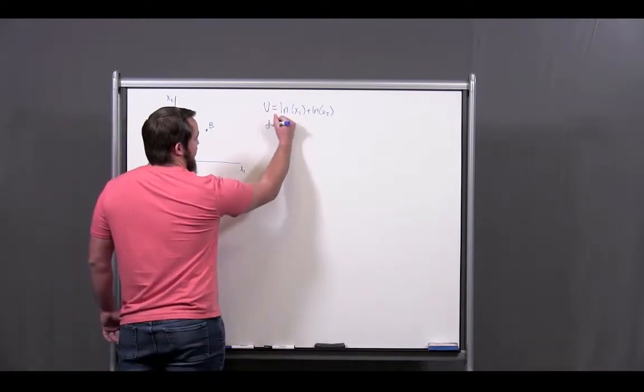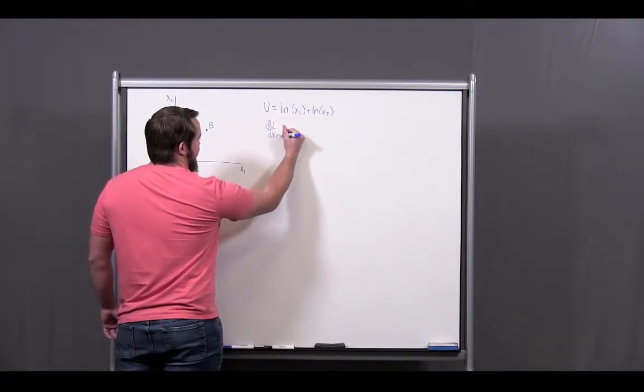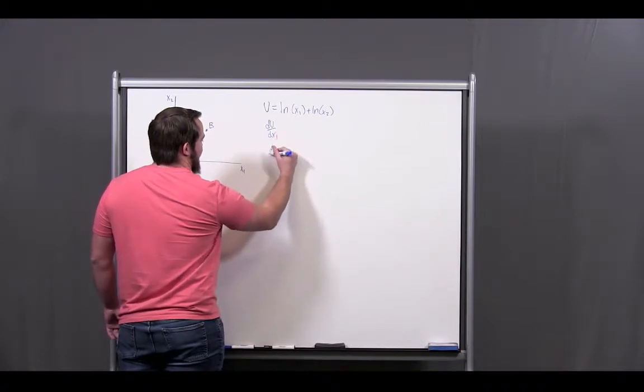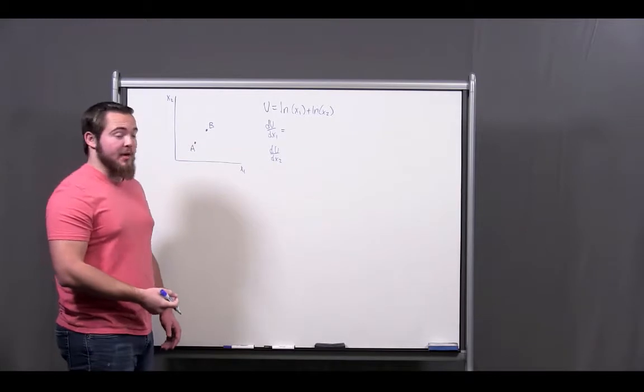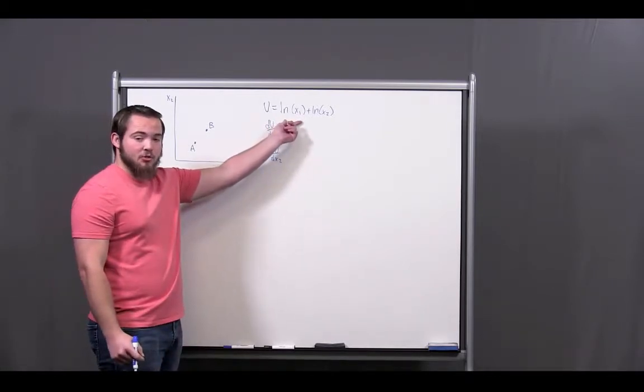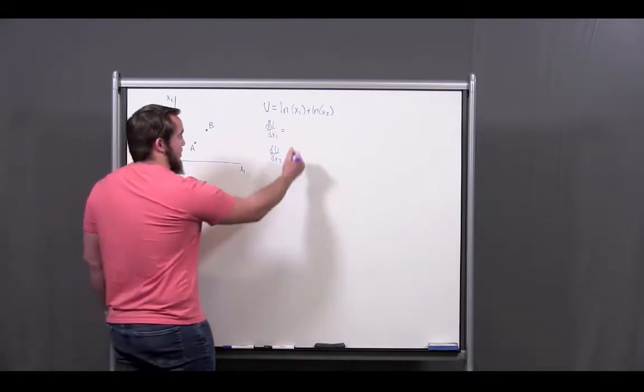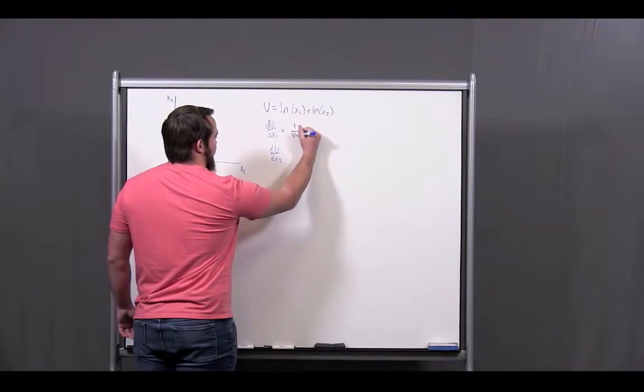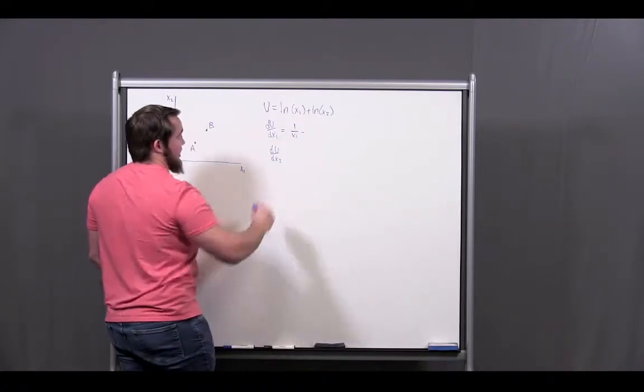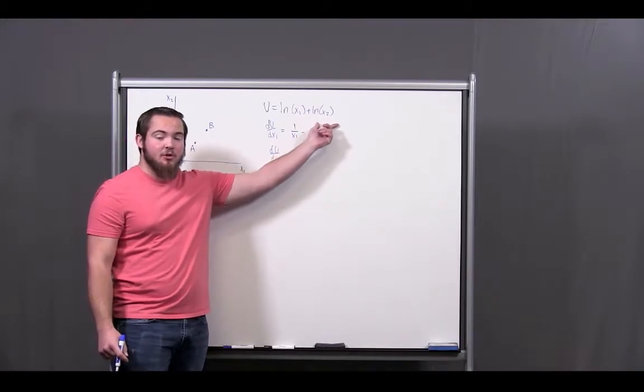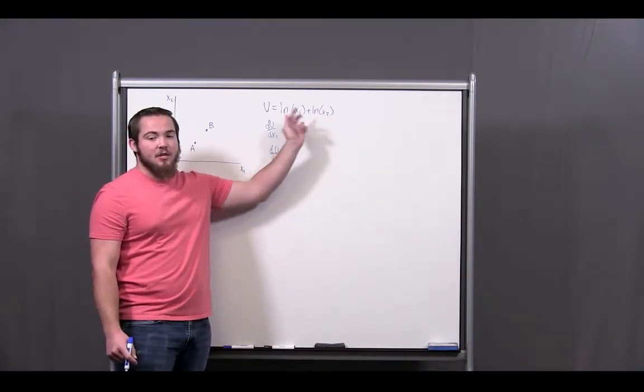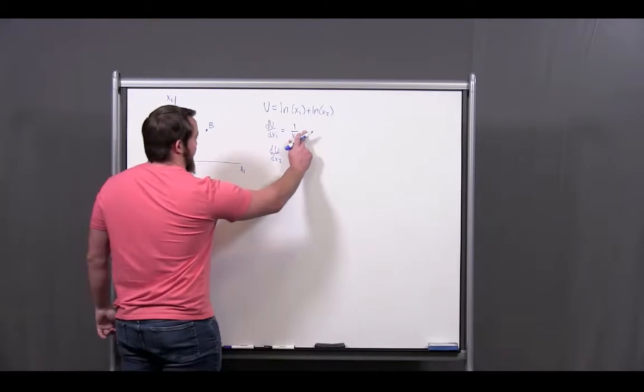So, what we want to prove is that both the first order conditions are always positive. So, let's go ahead and take those first order conditions. First, I have du dx1 and then I have du dx2. If we go term by term, I have a natural log of x, so that's going to be 1 over x1. For the second part, what I notice is that x1 actually does not appear in this term. So, this is going to be a constant and it's going to drop out. So, that's just going to be 0.